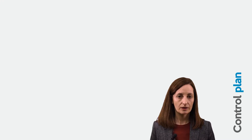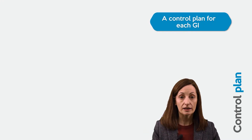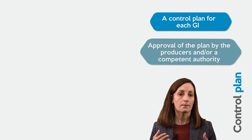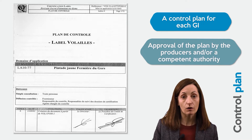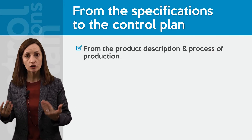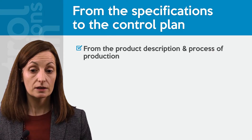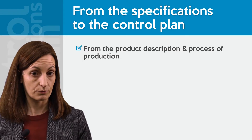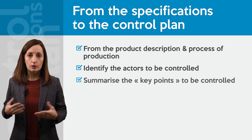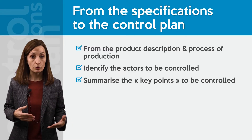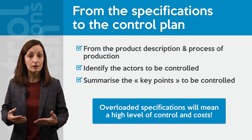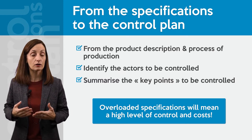Speaking about the control plan — normally there is one control plan for each product and each geographical indication. This control plan should be approved by the group of producers and/or a competent authority. To translate specifications into a control plan, we take firstly the product description and the process of production, identify the actors to be controlled involved in the process of production, and summarise all the key points to be checked by the control body. Be careful: an overloaded specification will mean a high level of key points and high costs.